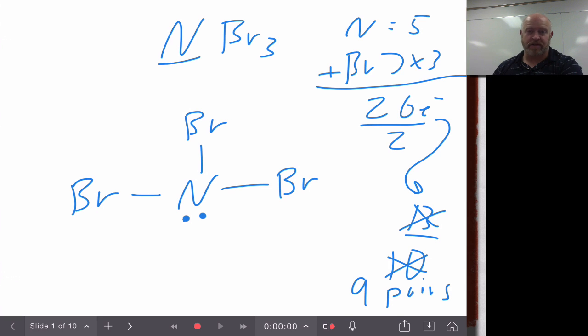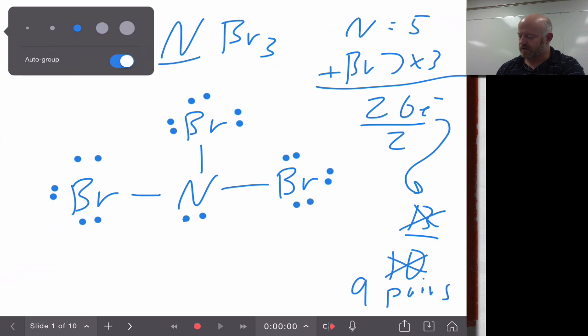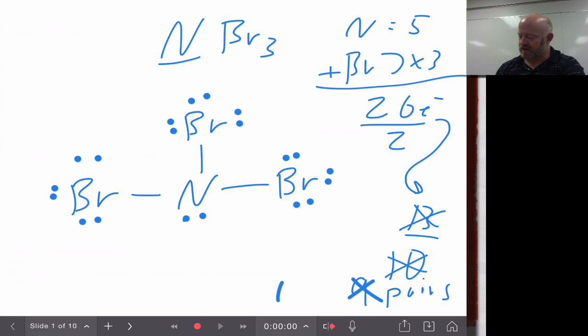And then, now what I have left over is I have nine more pairs. Well, it kind of works out nice because if we count, the bromine actually right now only has two electrons around it. So it needs six more, which means it needs three more pairs. So this one needs three pairs, this one needs three pairs, and this one needs three pairs. Well, I have nine, so three times three is nine. So that's going to work out nice. So what I'm going to do is I'm going to put three pairs on each of my bromines, and then that should take care of, or I should actually use up all my nine pairs. I'll have zero electrons left to work with, and then I should do some checking.